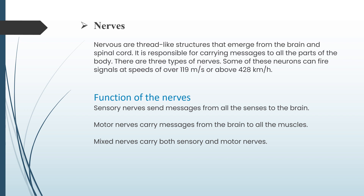Nerves are thread-like structures that emerge from the brain and spinal cord. They are responsible for carrying messages to all parts of the body. There are three types of nerves. Some of these neurons can fire signals at speeds of over 119 m/s or above 428 km per hour. Sensory nerves send messages from all the sense organs to the brain. Motor nerves carry messages from the brain to all the muscles. Mixed nerves carry both sensory and motor signals.